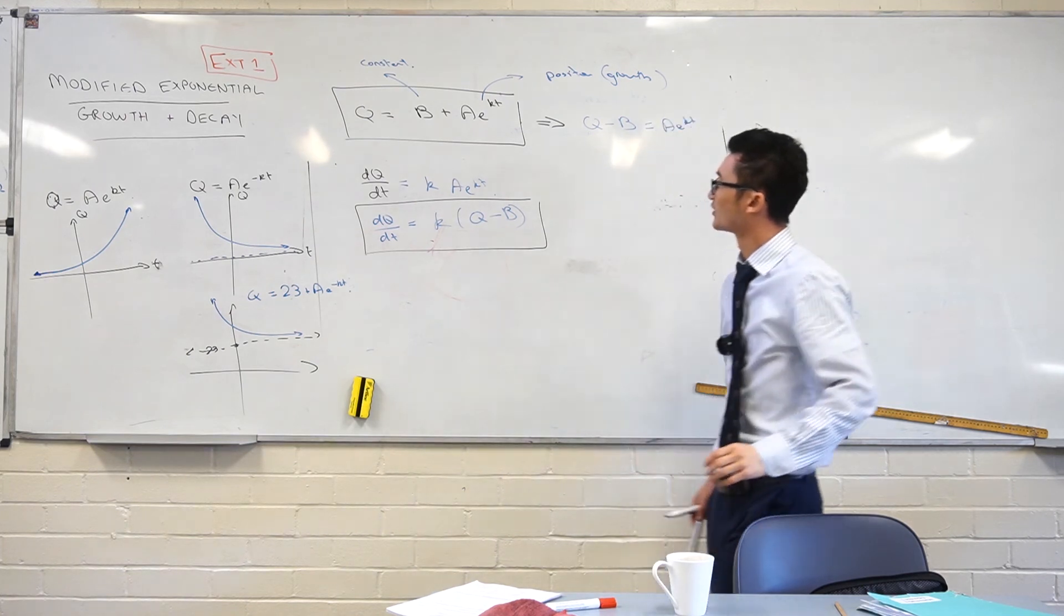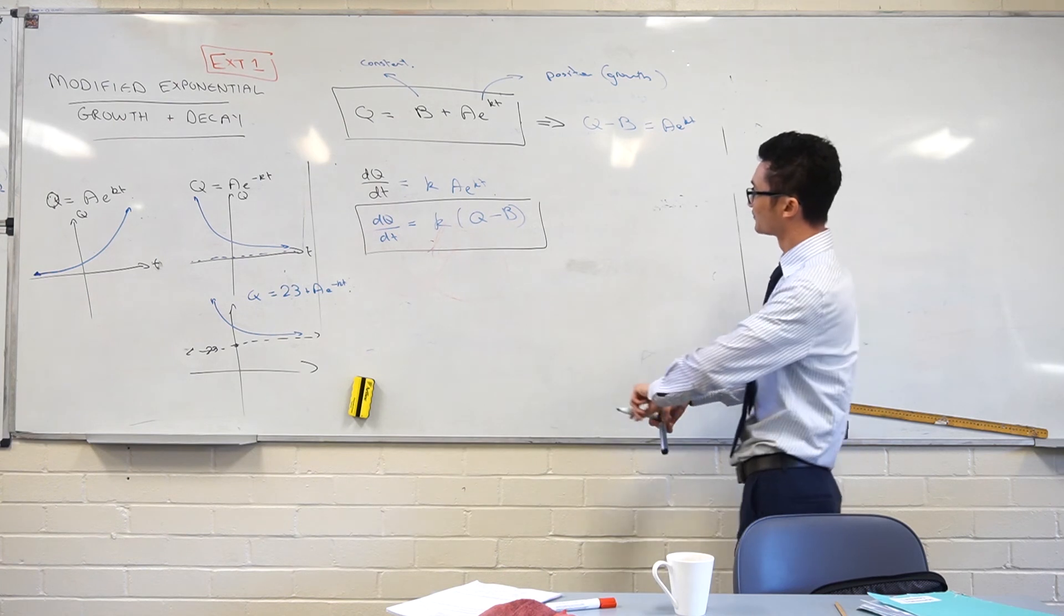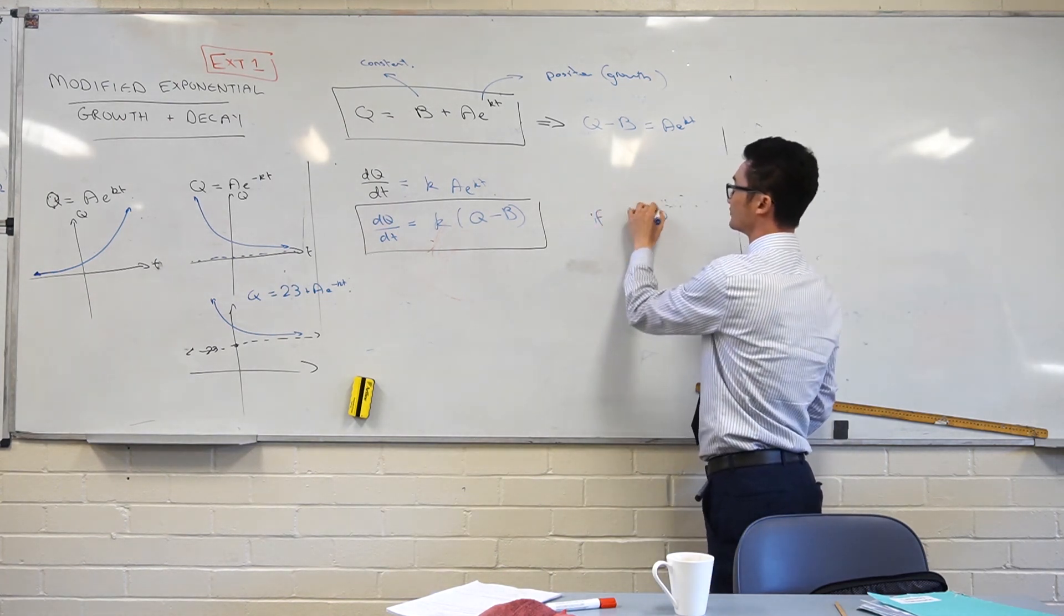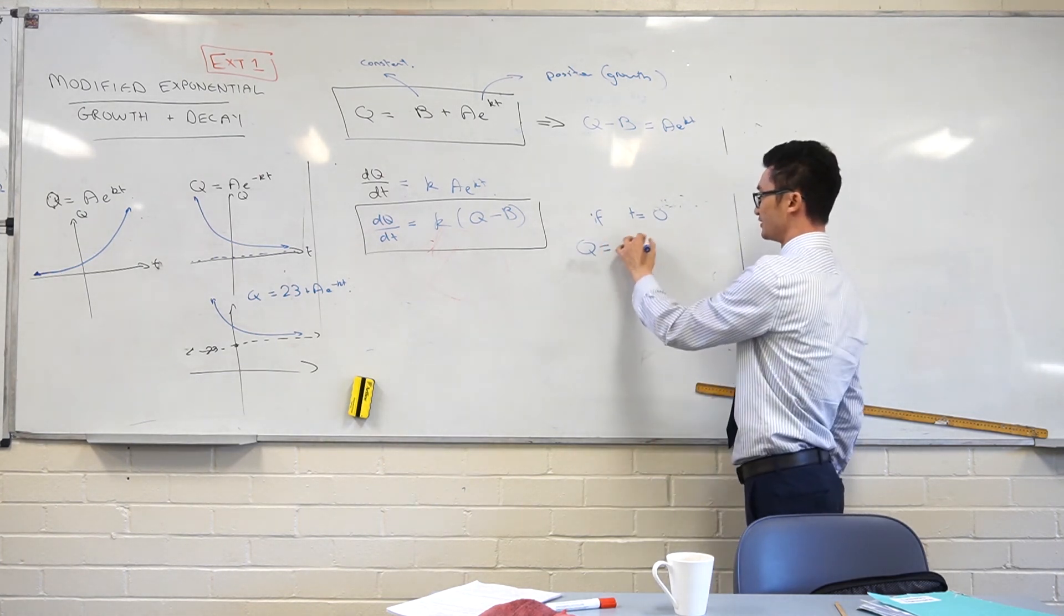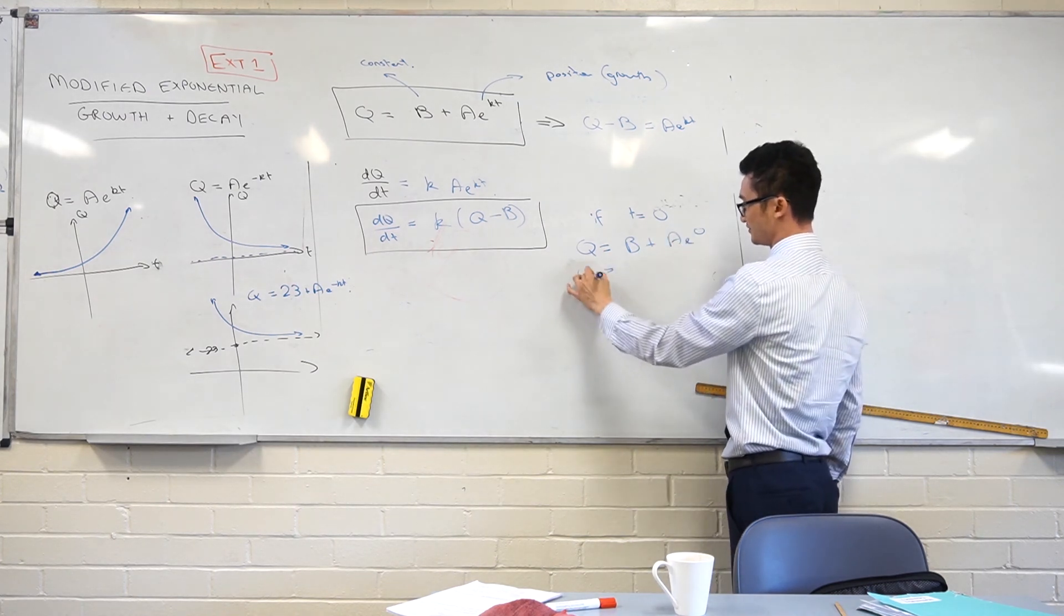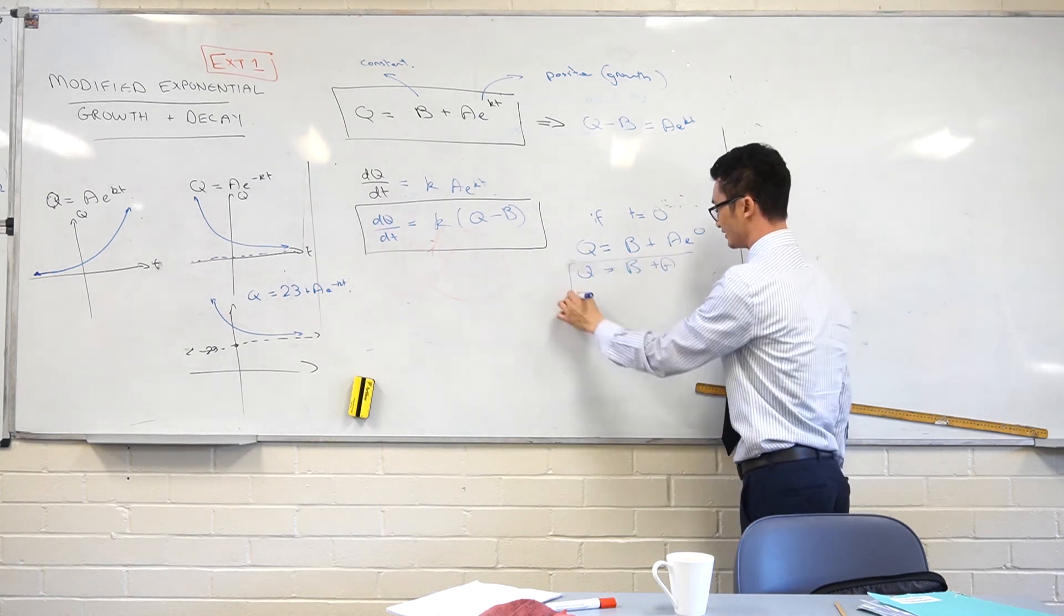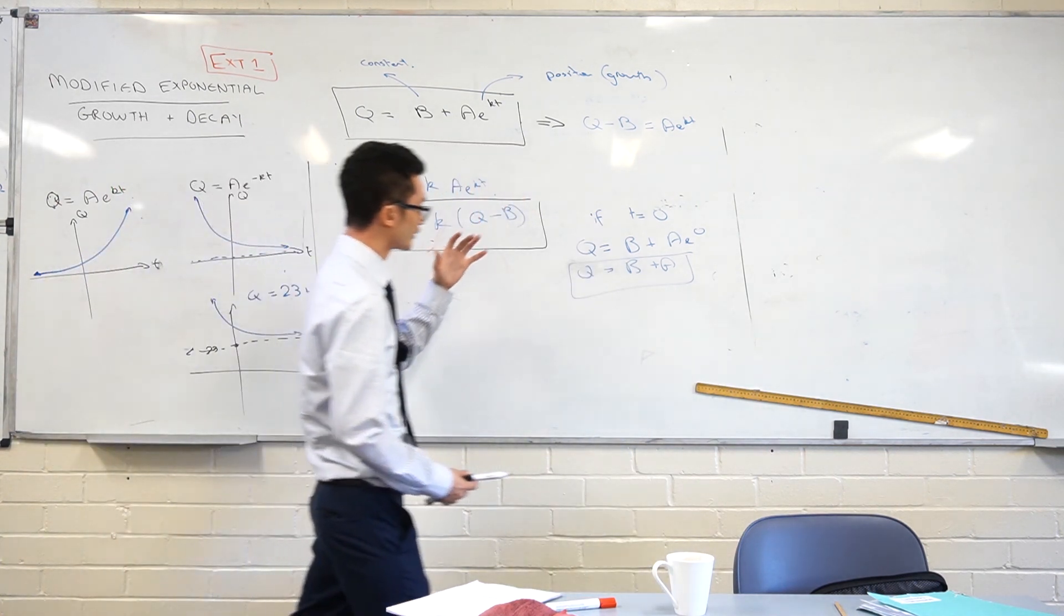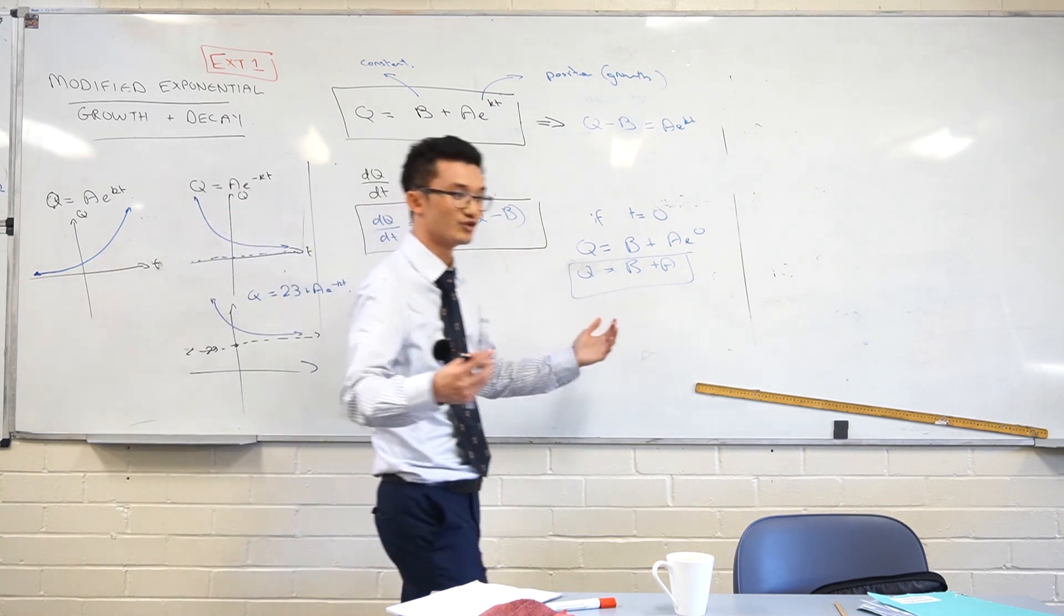Write that down for me. Now something that's interesting—before we had a as our initial quantity, but now what's our initial quantity? Well, if t equals zero, Q would equal b plus ae to the zero, which is just b plus a. So that's something else to consider. Subtle difference, but something to note. Your initial quantity is going to be the sum of these two here, if we have exponential growth.